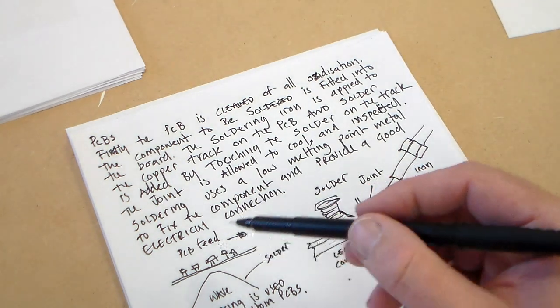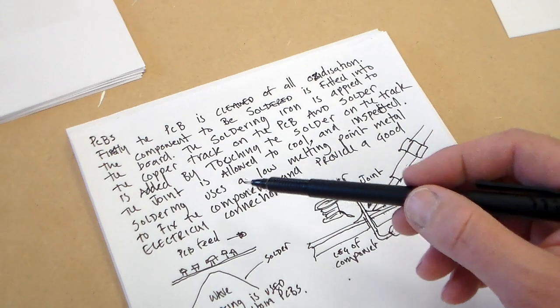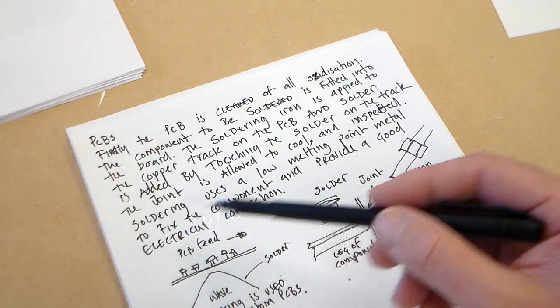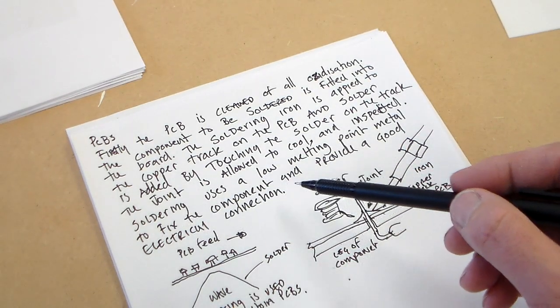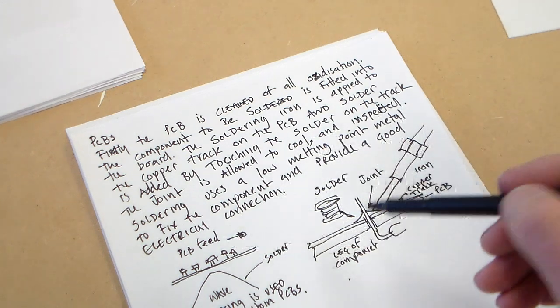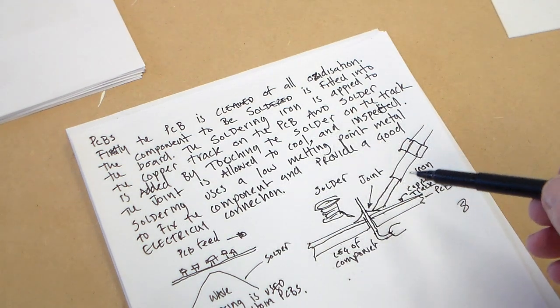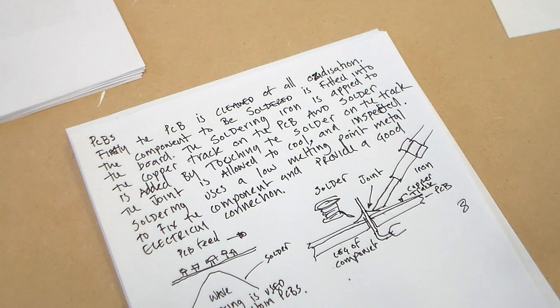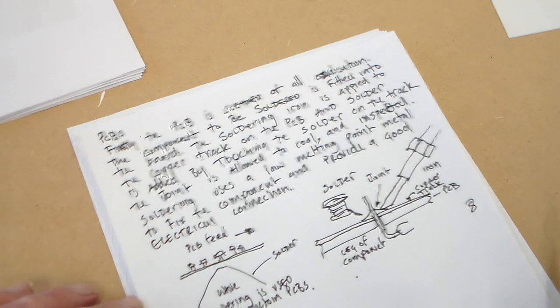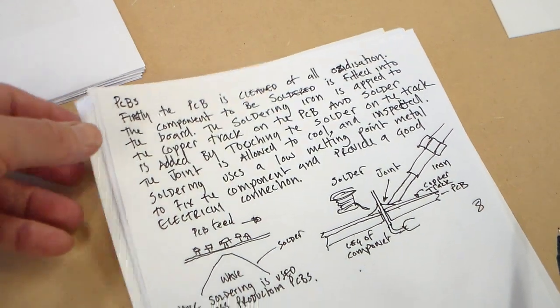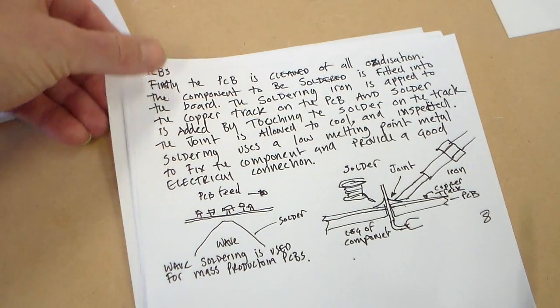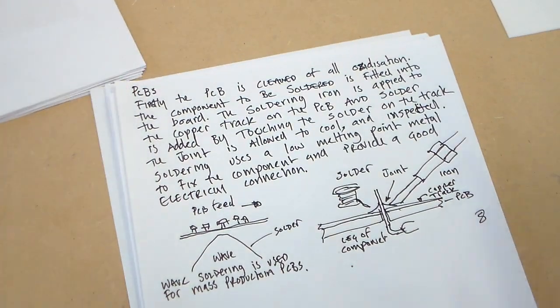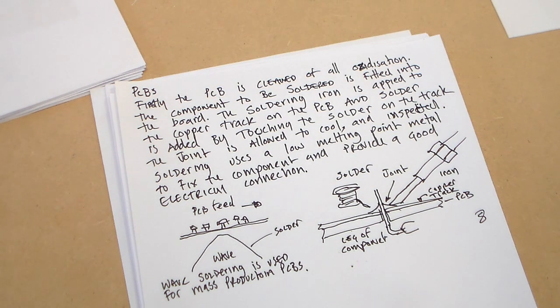So, as I say, we've described the process, we've said why it should, could be used, and we've done a little diagram of soldering, and we've also added the mass production process. So, I think there, I'll just move that so you can see that there. I think, again, there, we've got our eight marks. So, that's the two permanent joining method on that question. Thank you.